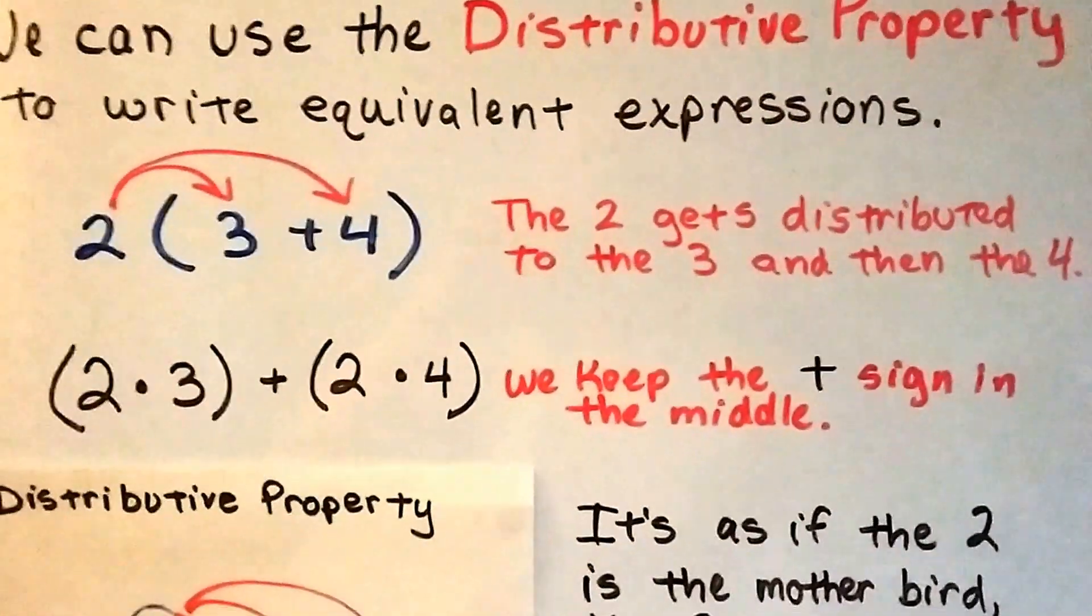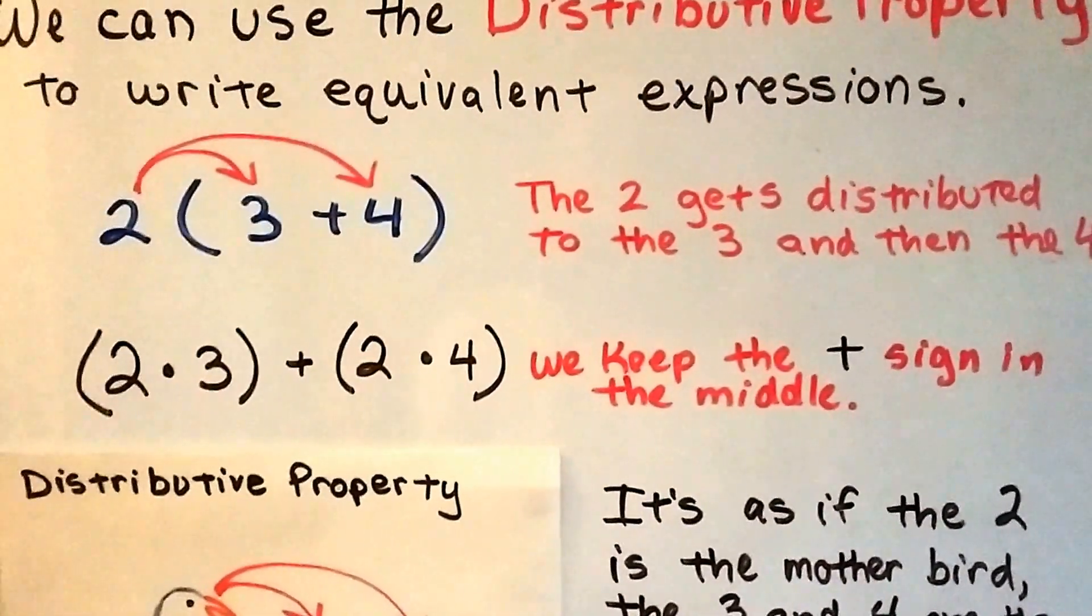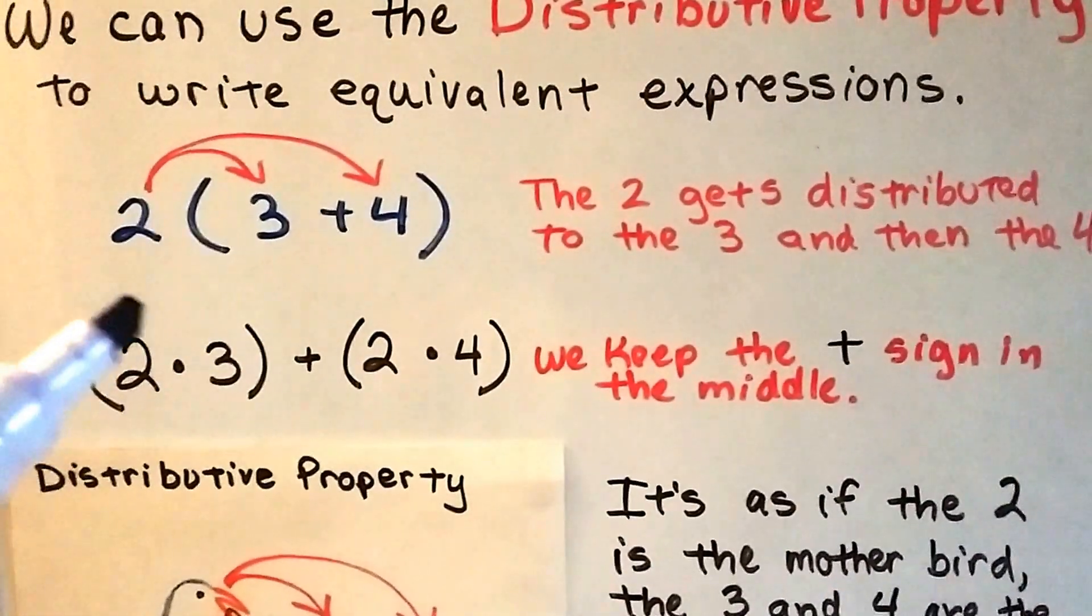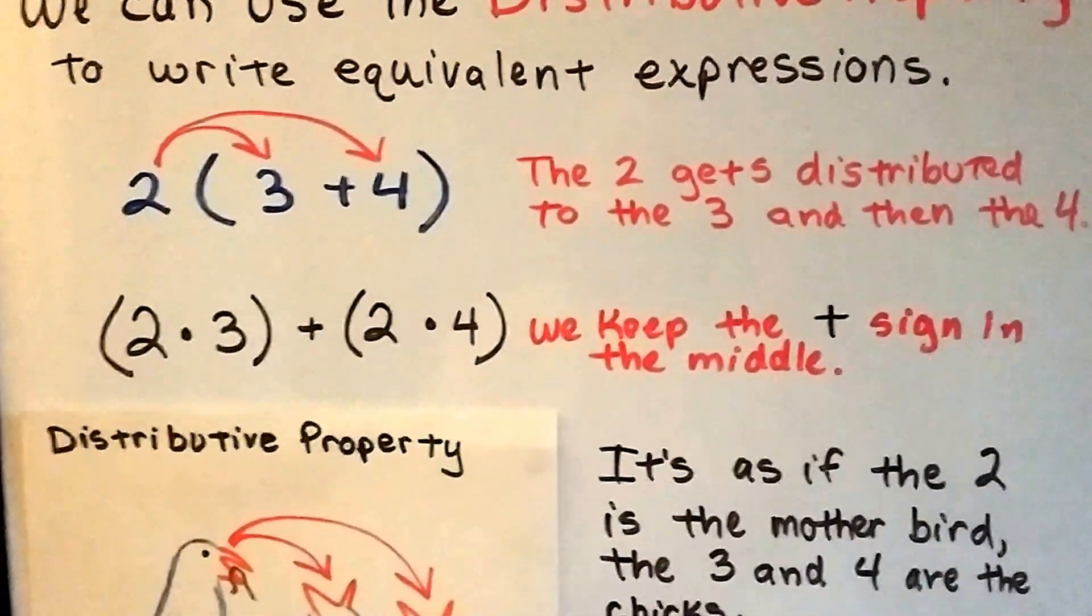In this one, the 2 gets distributed to the 3 and then the 4. We end up with 2 times 3 plus 2 times 4. We keep the plus sign in the middle.